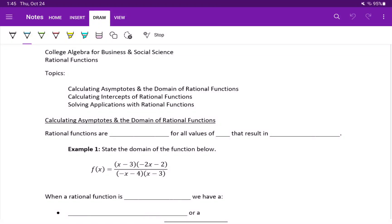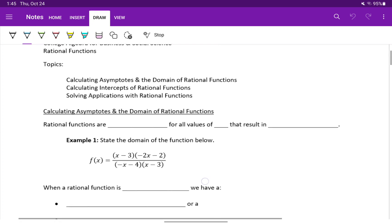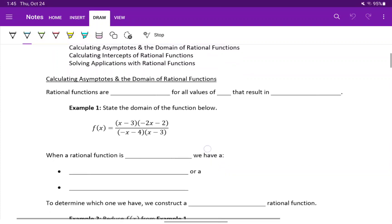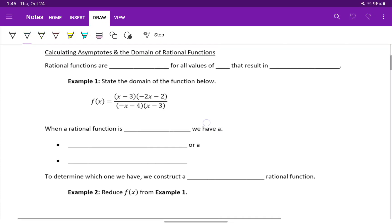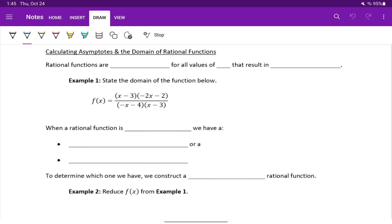We've looked at how we can identify characteristics and behaviors of rational functions by looking at the graph of that function. Now what we want to do is revisit some of those topics and see how we can find those same results just by investigating the function itself, or by calculating those results.